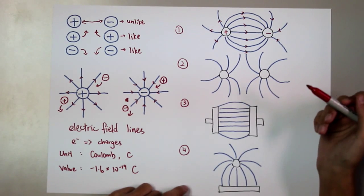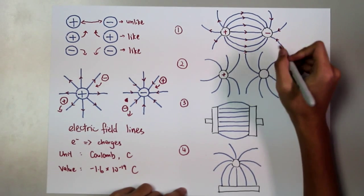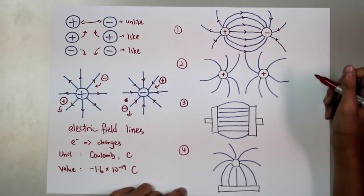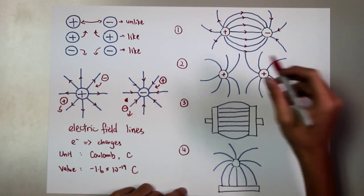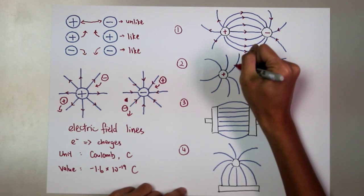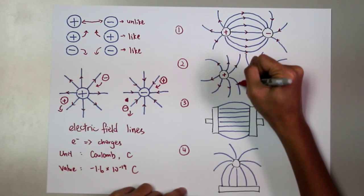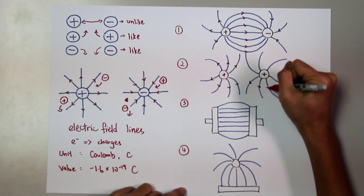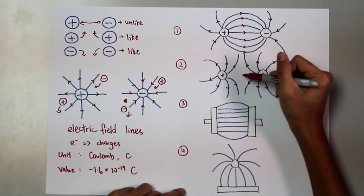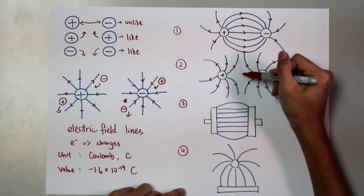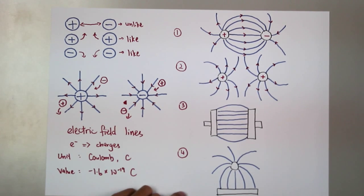The second condition: where there are two like charges — I assume this as positive and this as positive. The direction of electric field lines will be pointed outwards as well. You can see a region here — we call it a neutral point, due to the repulsion of the two spherical charges.